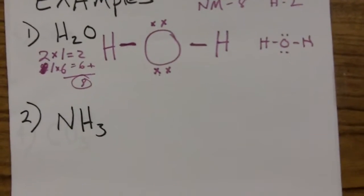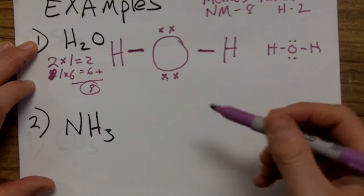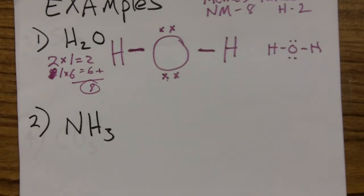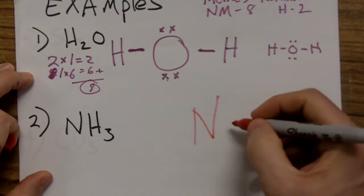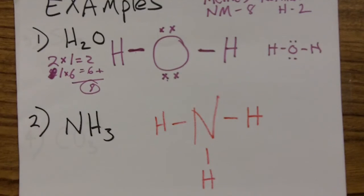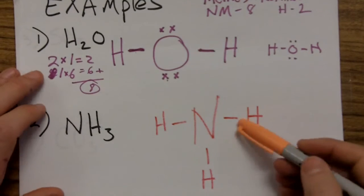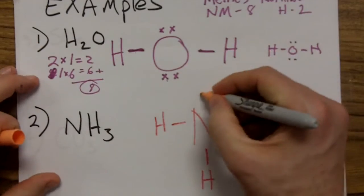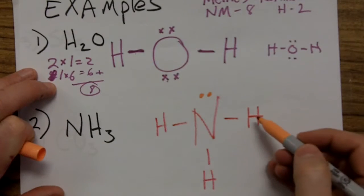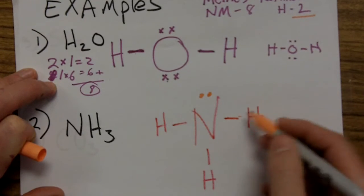The next example is NH₃, known as ammonia. Follow the same steps: put the thing there's only one of in the middle — that would be nitrogen. Put the H's around it, keeping nitrogen in the center and attaching each hydrogen to it, not to each other. Then make them all happy. Around nitrogen we count one, two, three, four, five, six — so we give it seven and eight to complete the octet. Hydrogen only wants two and already has a dash, so once it has a bond it's done.